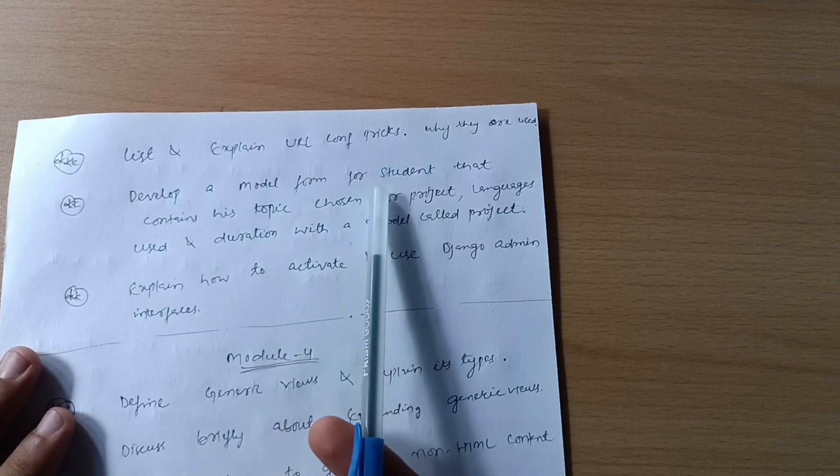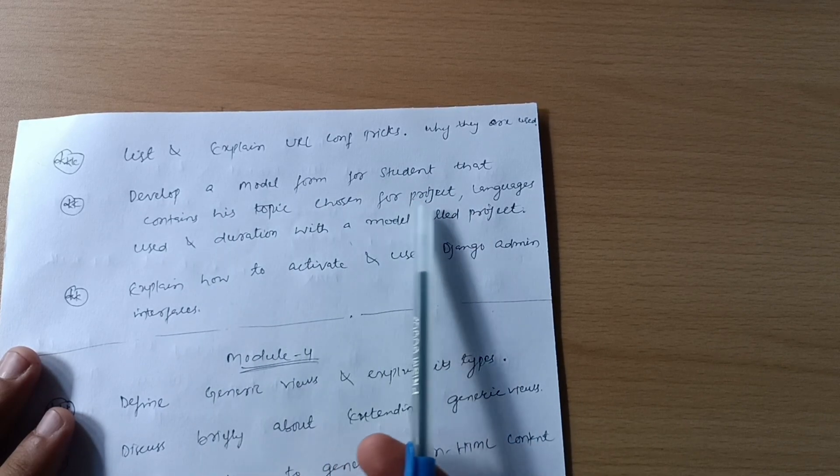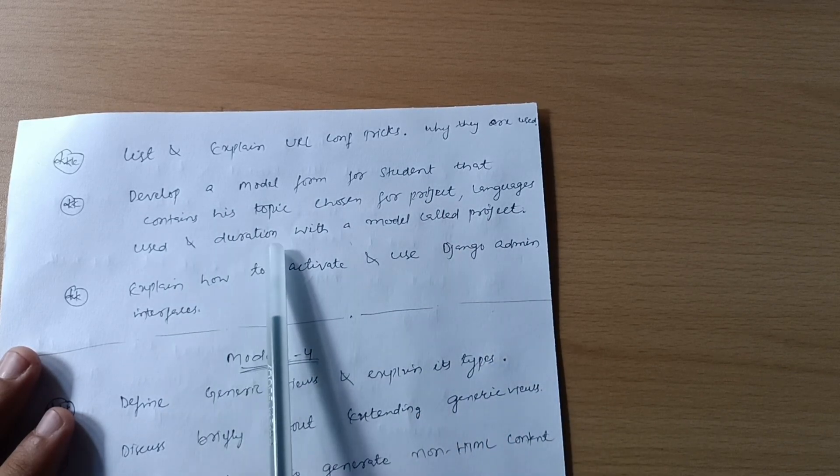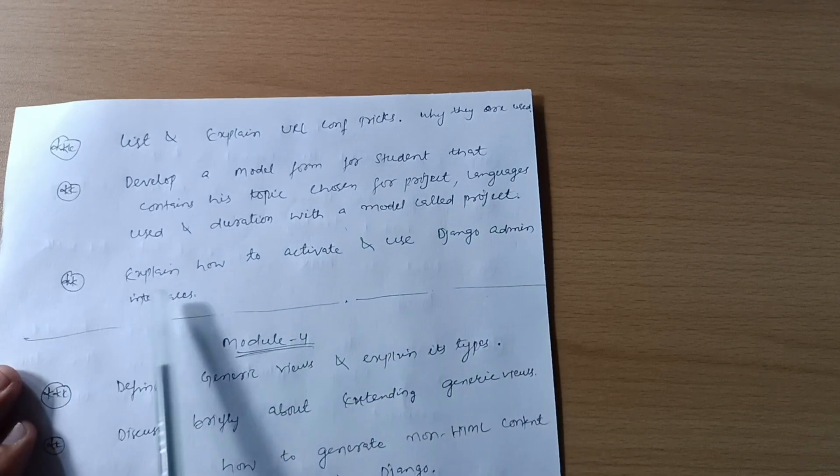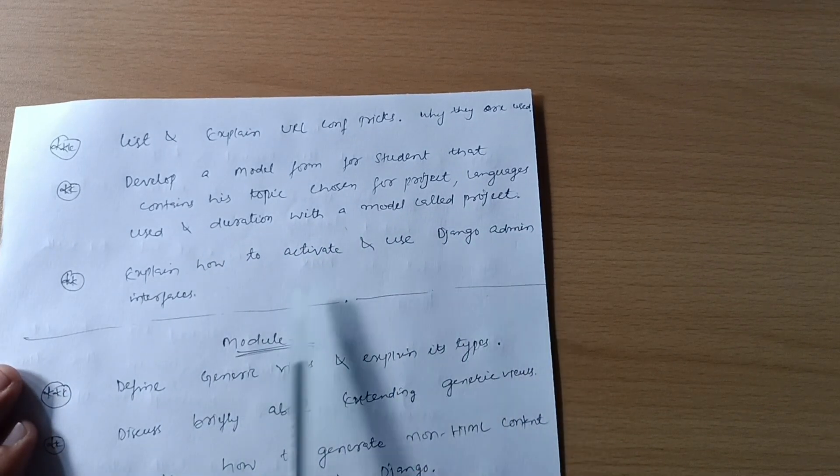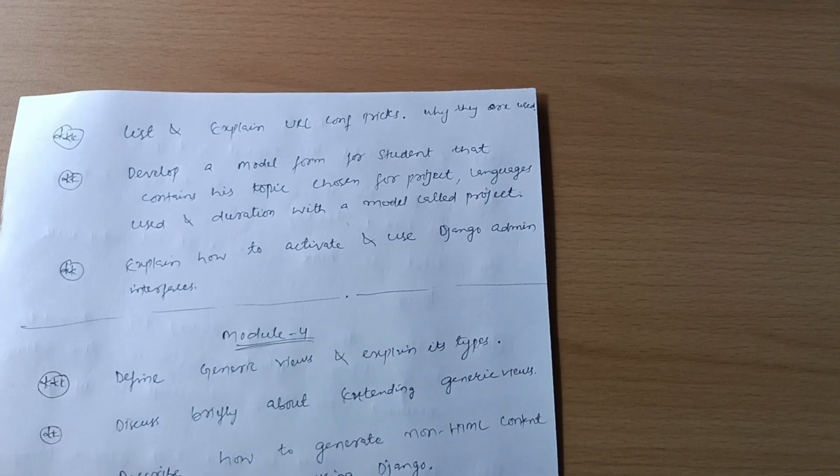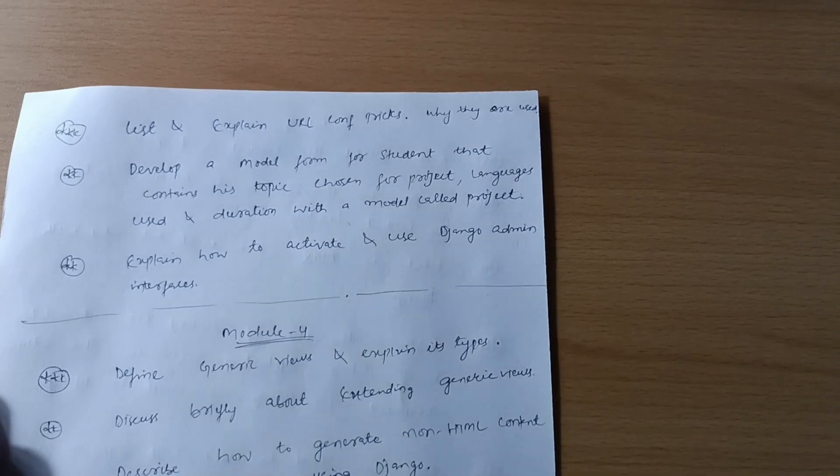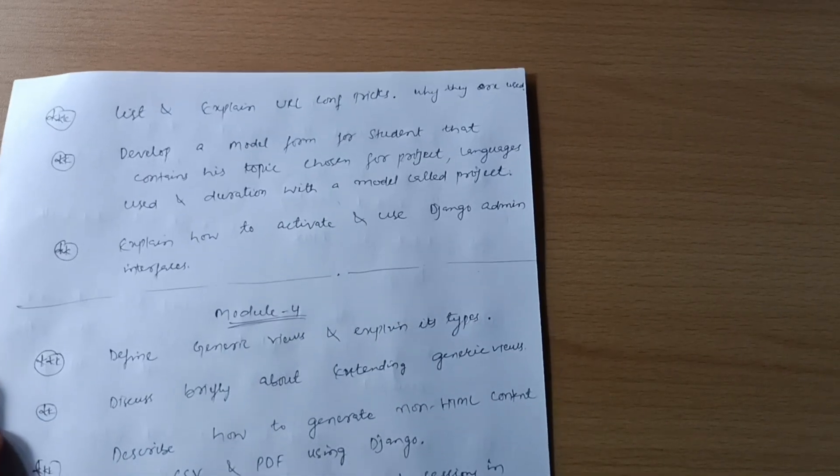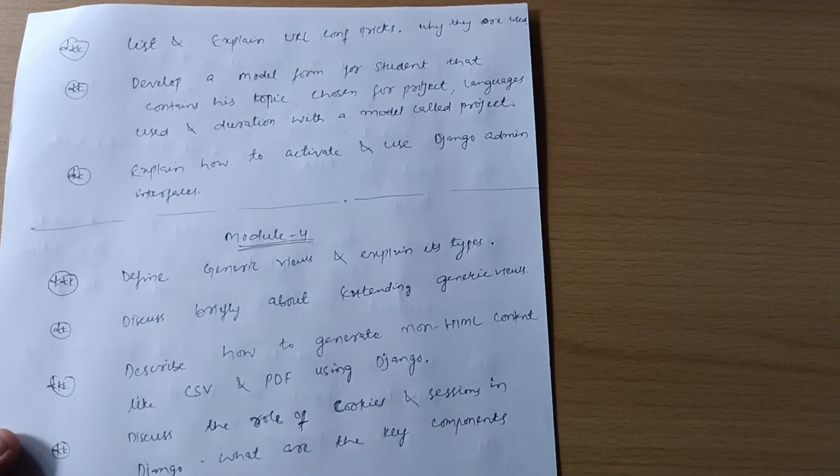Develop a model form for student that contains topic chosen for project, language used, and duration with a model called Project. Explain how to activate and use Django admin interfaces. This is all about Module 3, and you have to practice some programs whatever you have read in your college. You should not leave programs at all.